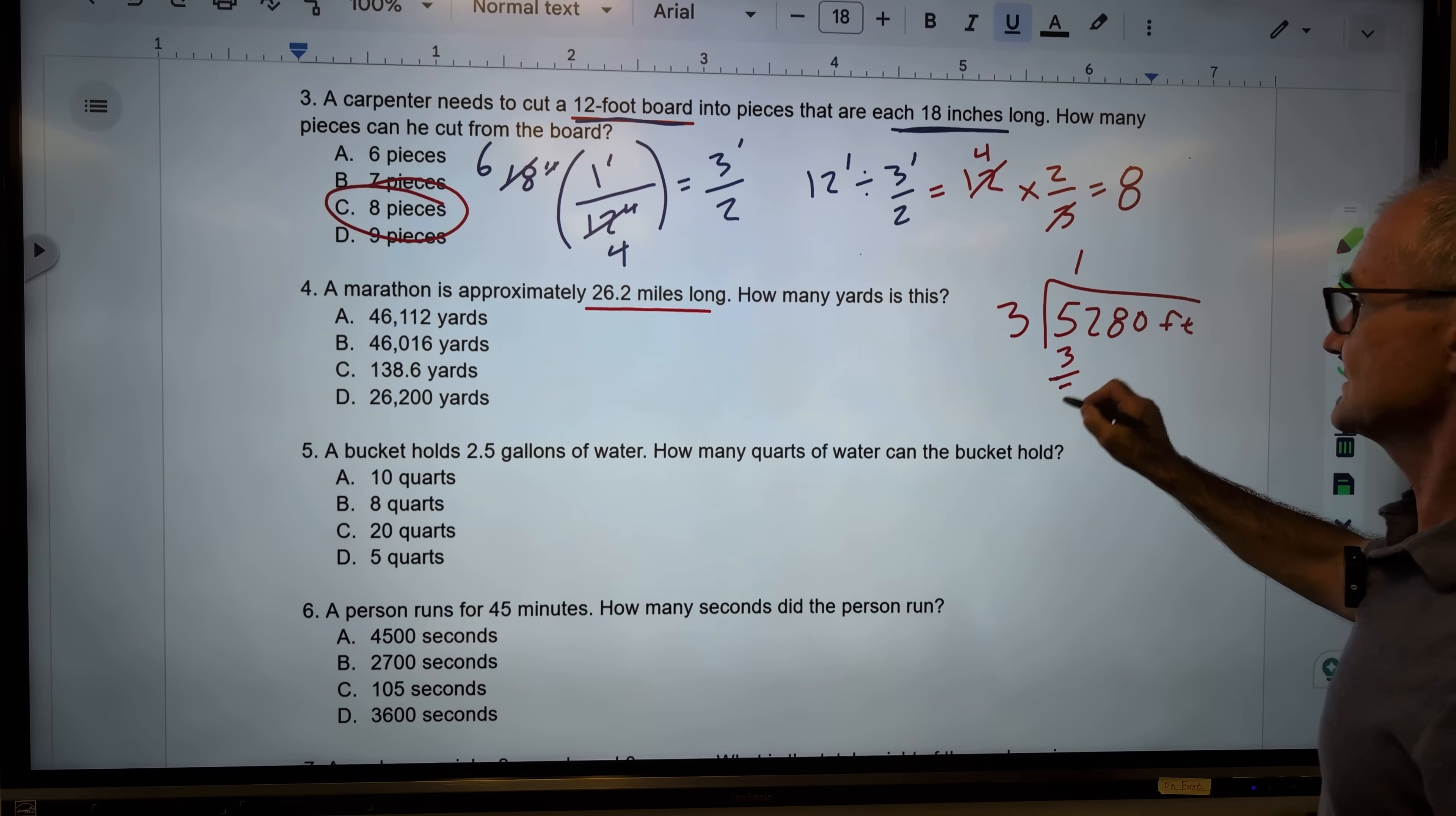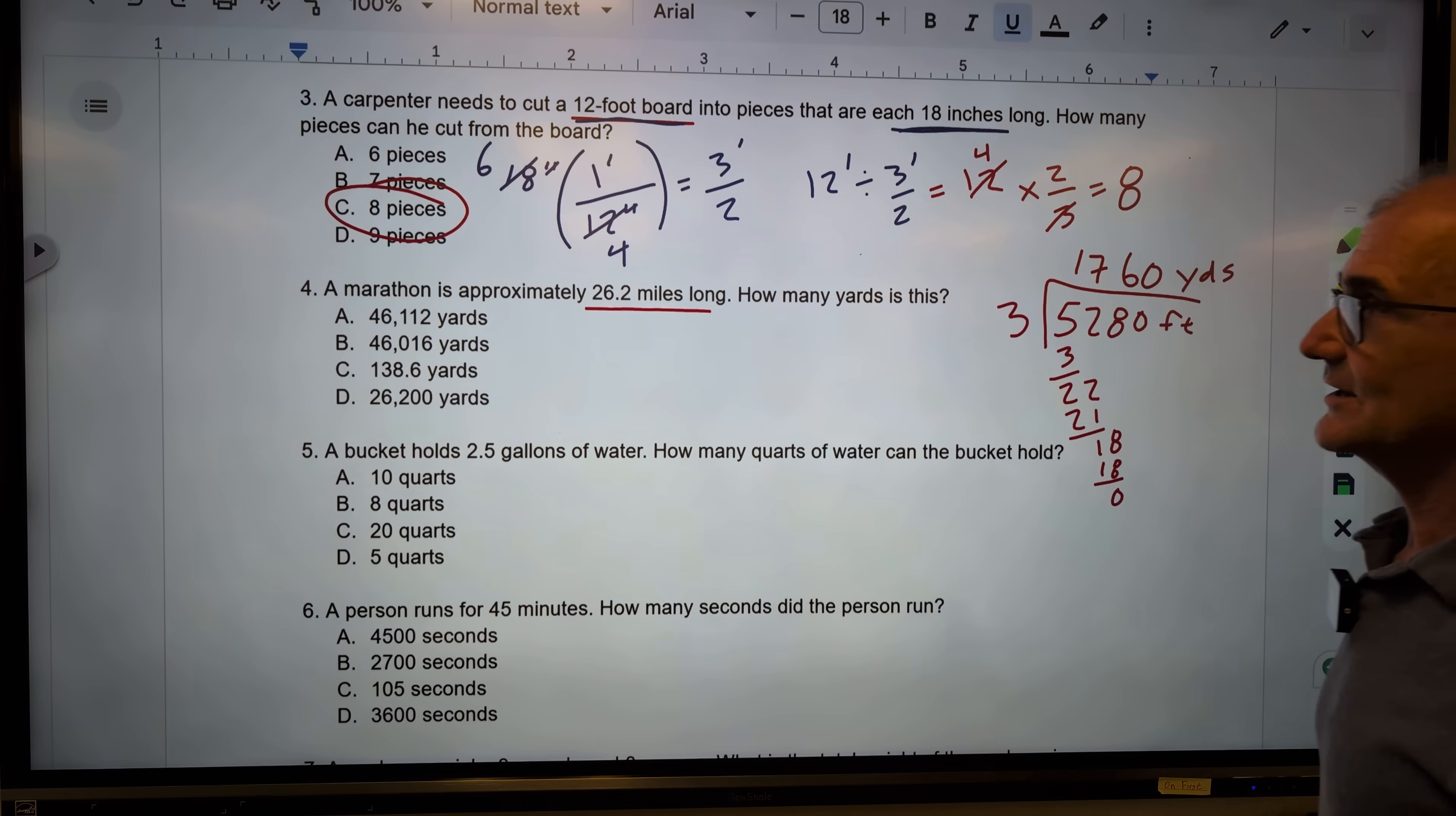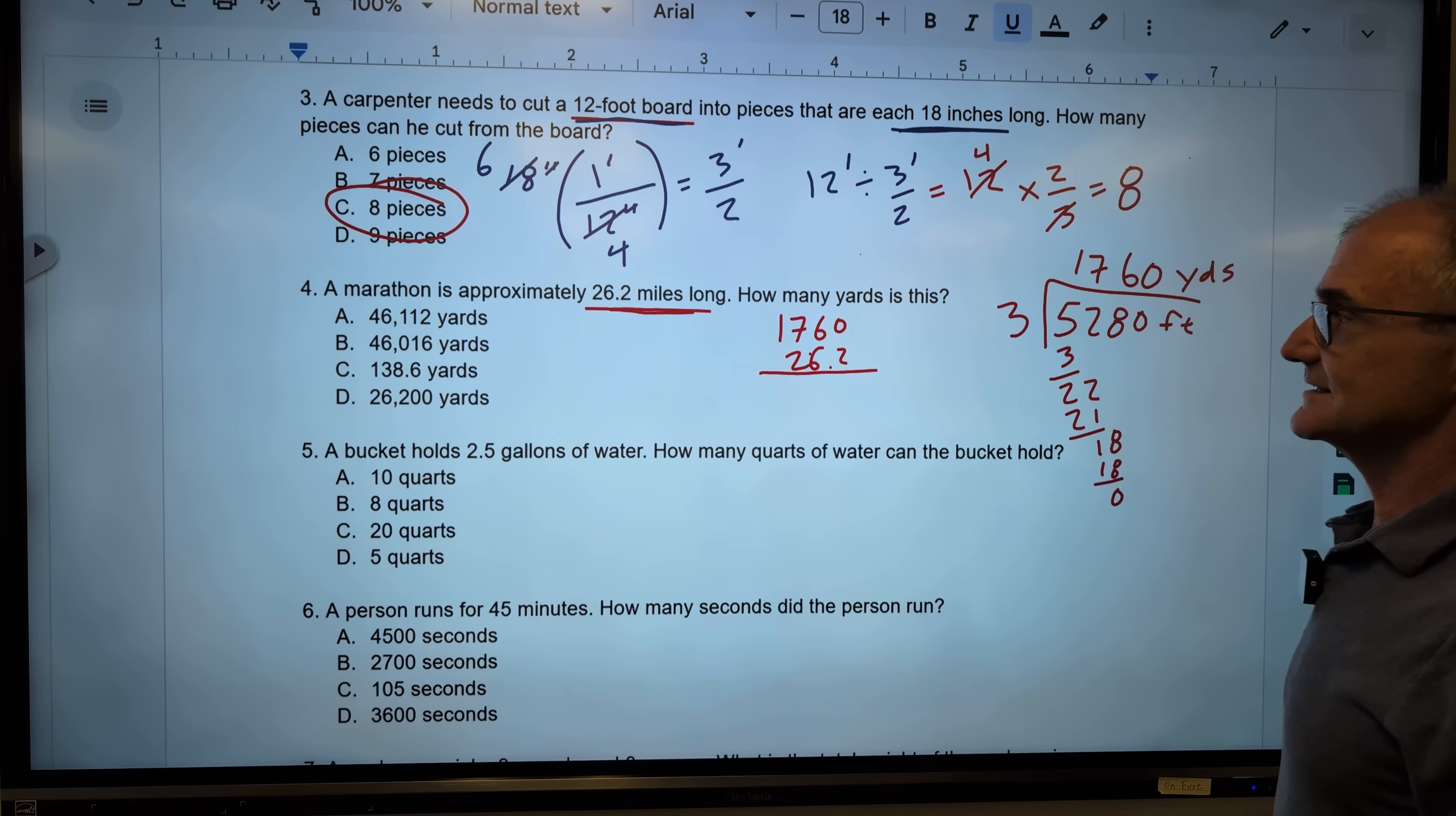So if I divide this by 3, that's going to give me how many yards? 3 goes into 5, 1 times. 3 goes into 22, 7 times. So give me 21. Bring down the 8. 3 goes into 18, 6 times. And 0, right? So 1,760 yards is equal to a mile. So I have a marathon is this many miles. How many yards is this? So I have to do this number right here. 1,760 times the number of miles, 26.2. These are yards. These are miles. And that's going to give me the total number of yards.